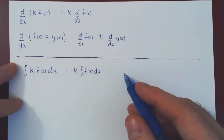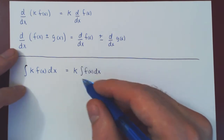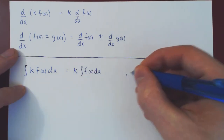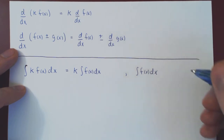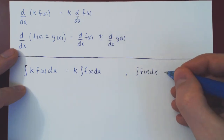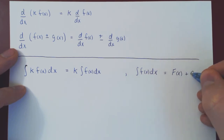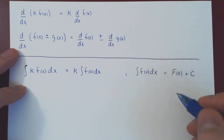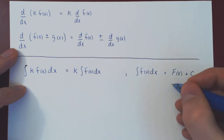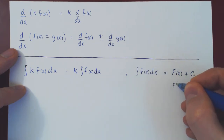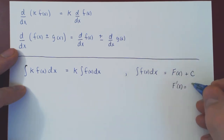Let's see why this makes sense. The integral of f of x dx is asking for all anti-derivatives of little f of x, so it's uppercase F plus C, where uppercase F is an anti-derivative of lowercase f. So if we differentiate uppercase F, we get back the original function.